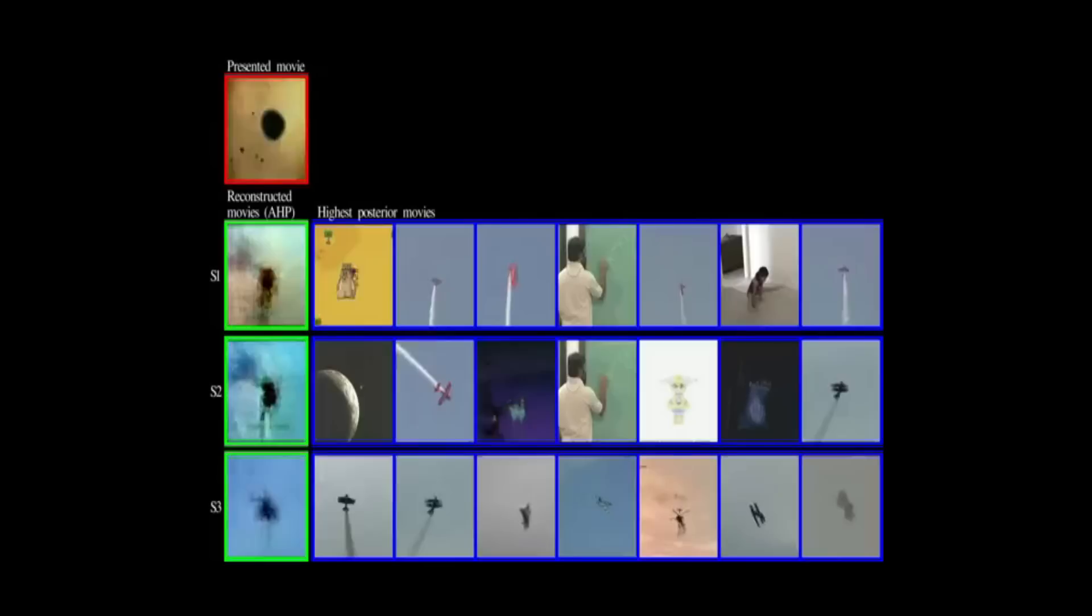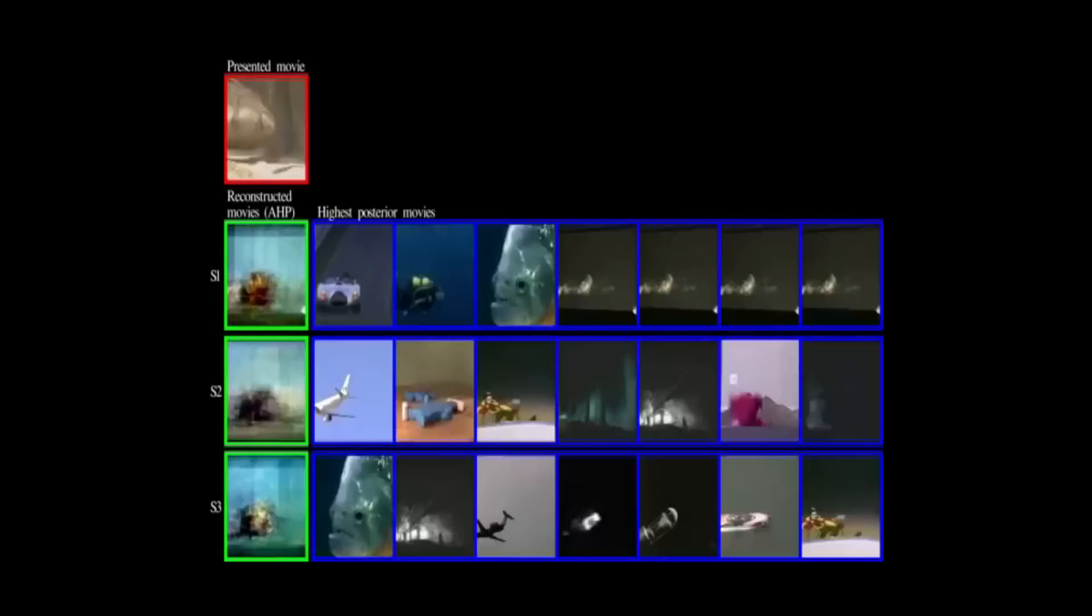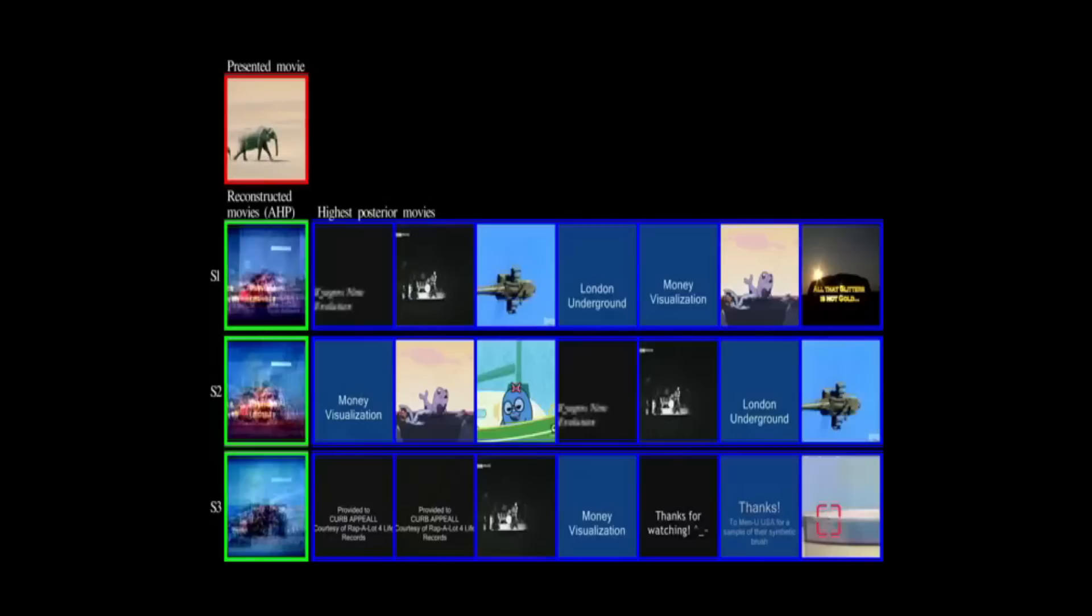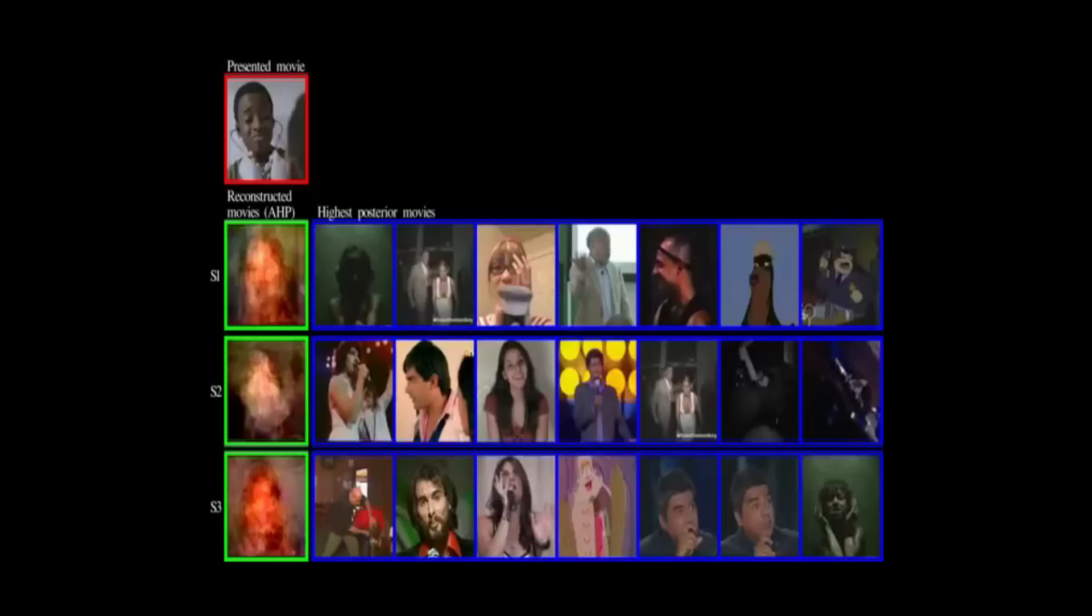And check this one out. So the picture in the top left-hand corner is what the subjects were shown. Scientists recorded how their brainwaves responded to those images, and then applied those patterns against an enormous batch of totally random YouTube clips that the subjects had not seen. The computer then gave its closest guesses about what the person was watching, and that's what you see in the three rows down.